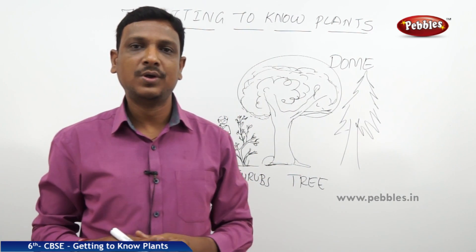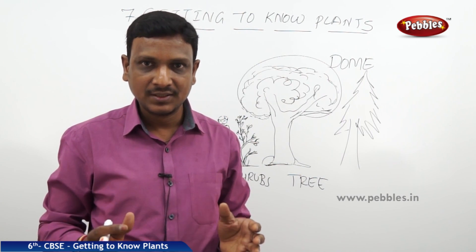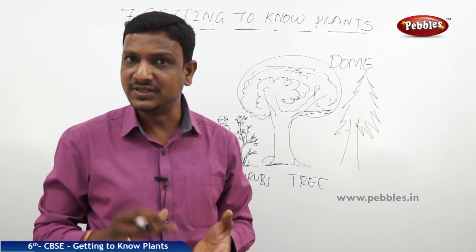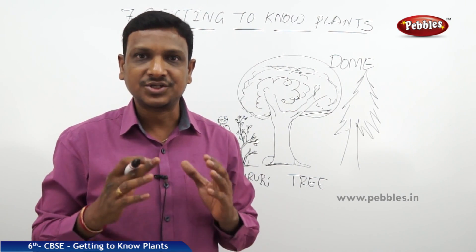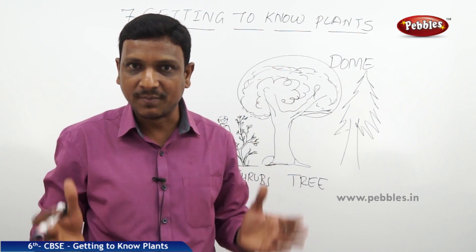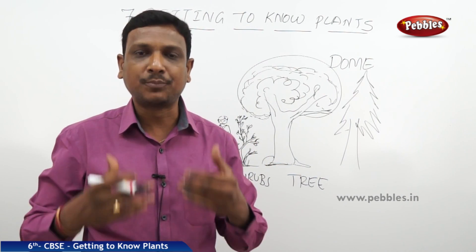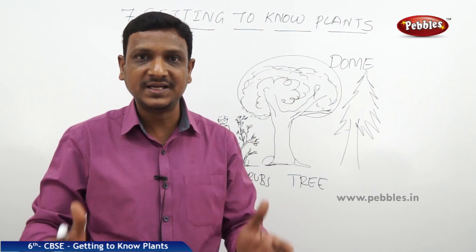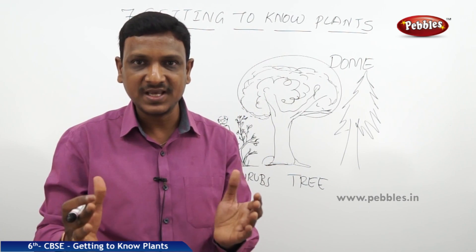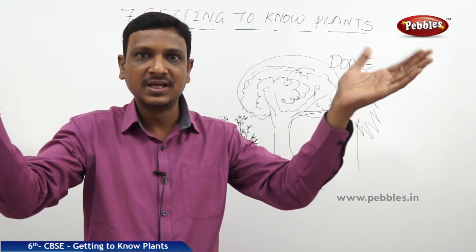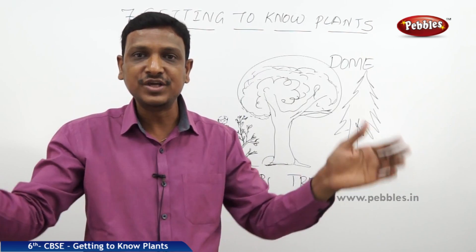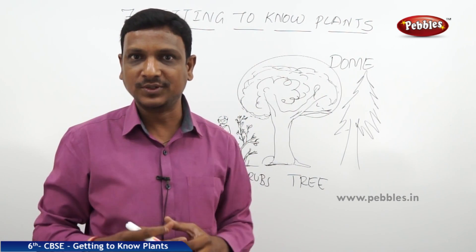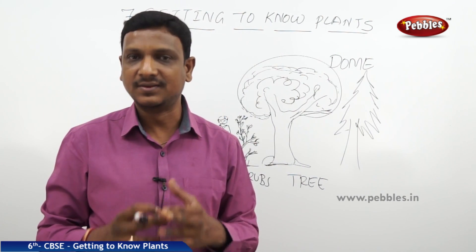Based on appearance and size, we have divided plants into herbs, shrubs, and trees. Herbs are plants with a very tender stem and are very small in size. Shrubs are plants with woody stems, having branches from the base, and grow approximately to your size or a little higher. Trees are very big plants with a very broad, woody trunk; branching occurs at a certain height and the leaves form a canopy or dome shape.